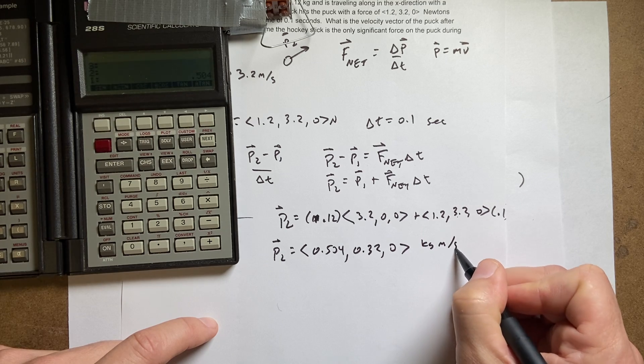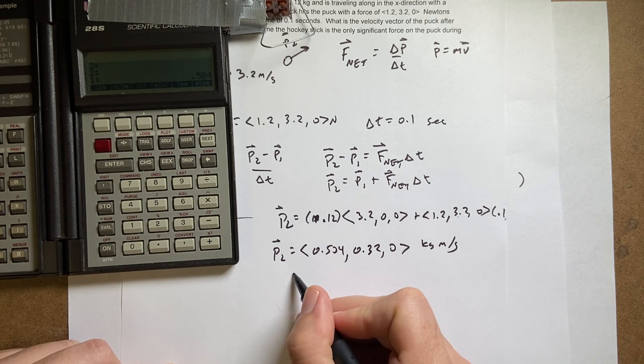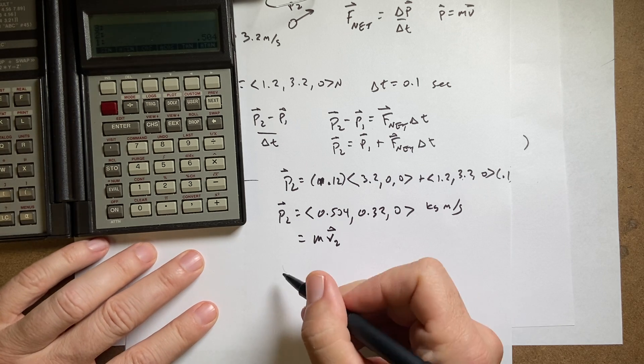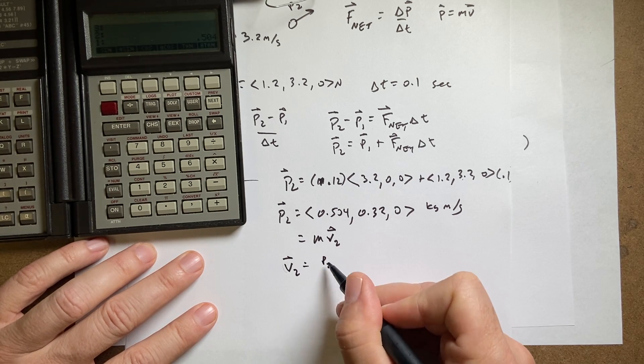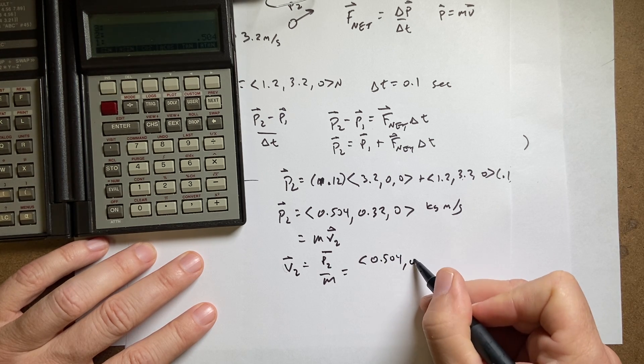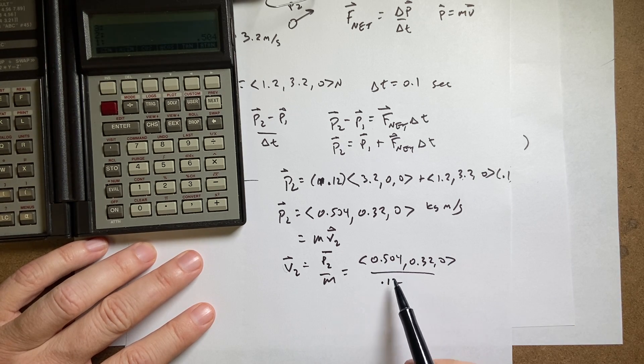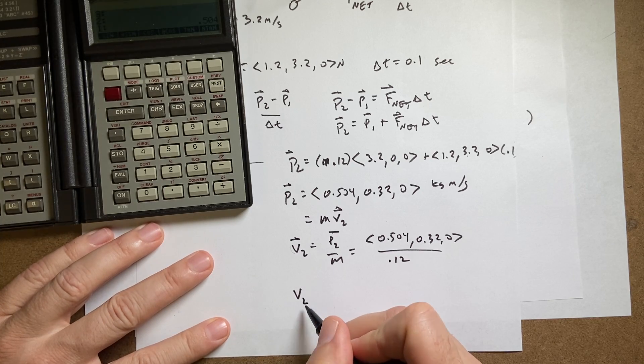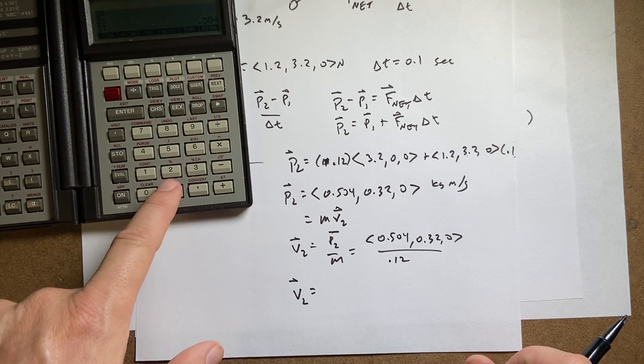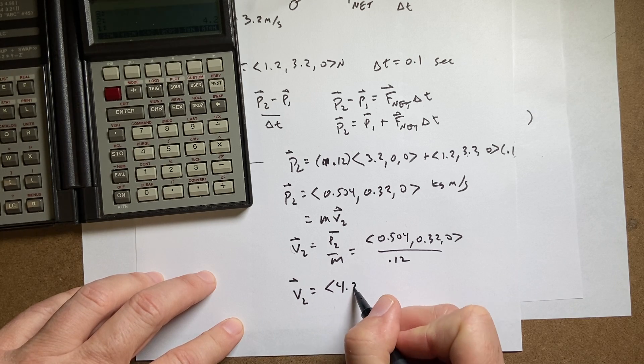Now the problem asks for not the momentum but the velocity. So this equals mv2. So v2 is going to equal p2 divided by m. That's going to be 0.504, 0.320 divided by 0.12. So I have to divide every component by 0.12. So I get v2 equals - let's just do it right here. I already have 0.504 in there, and that's 0.12 divided by. And I get 4.2.